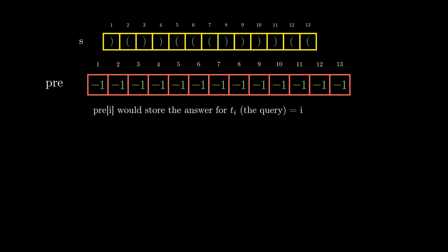Now how to compute pre[i] for a particular i? Let's consider the fifth index of the string s. If you are given a query with t as 5, then the answer would be 10, because the substring 5 to 10 forms a valid bracket sequence. So it seems that we should push opening brackets onto the stack and pop the opening brackets when you find a corresponding closing bracket. In fact, it would be better to push the indices rather than pushing the bracket itself, because the indices would be unique.